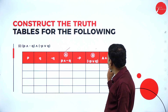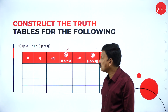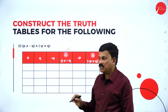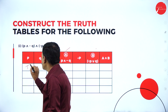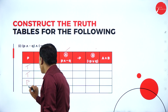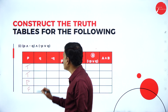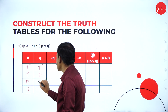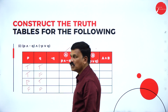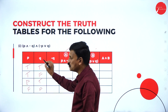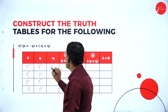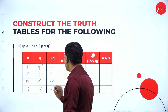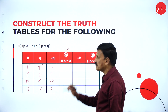Now just write the truth values for P and Q. For P it is true, true, false, false; whereas for Q it is true, false, true, false. Now negation of Q: for T it is F, for F it is T, for T it is F, for F it is T. This is the negation of Q.